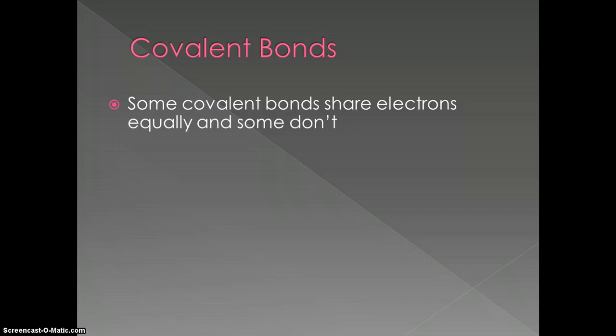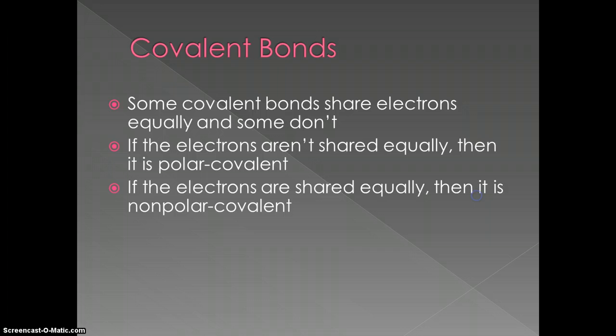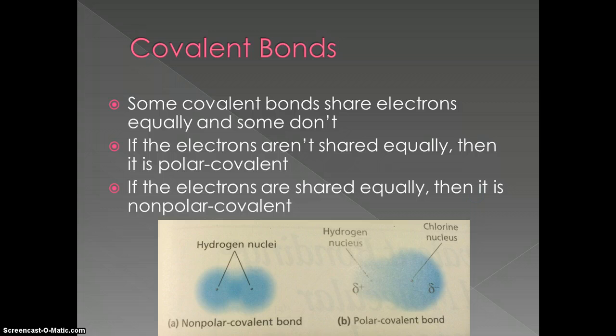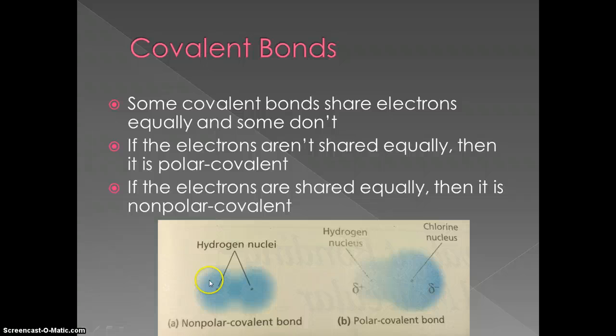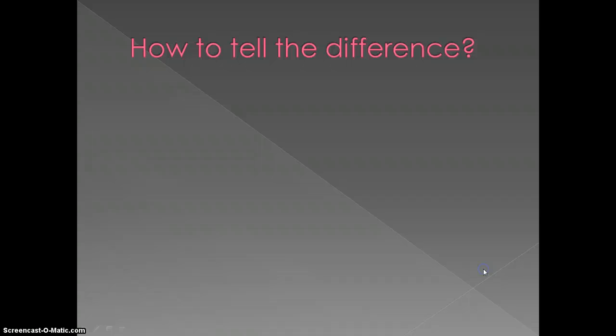In covalent bonds, we have two types because some covalent bonds don't share electrons equally. If the electrons aren't shared equally, we call it polar covalent. If the electrons are shared equally, it's non-polar covalent. In a non-polar covalent bond, the electron clouds are equally shared and the electrons are equally distributed. In a polar covalent bond, more of the electron density is pulled towards one element versus another.